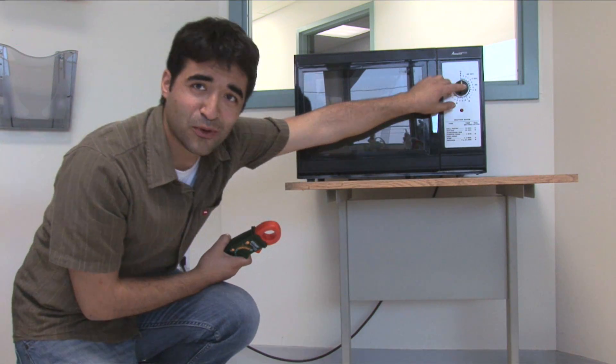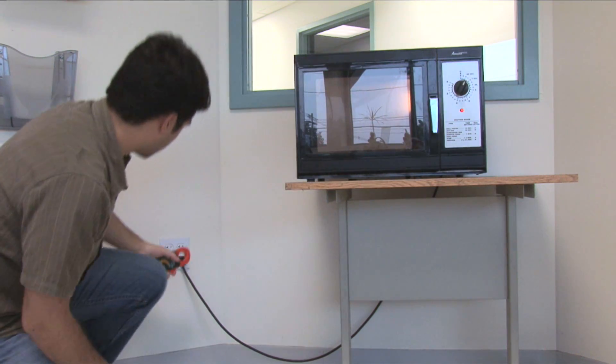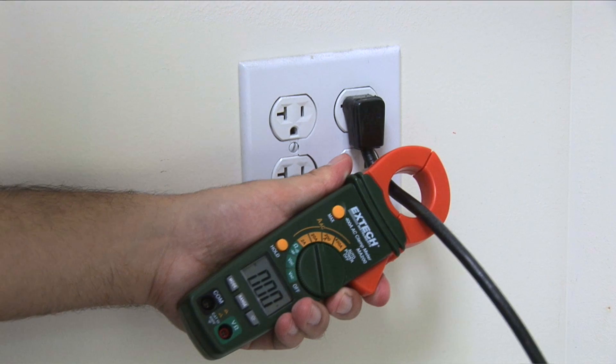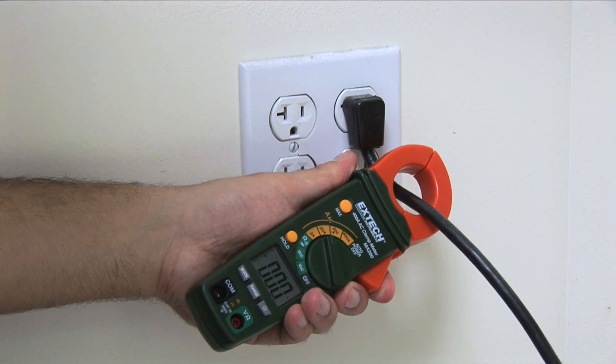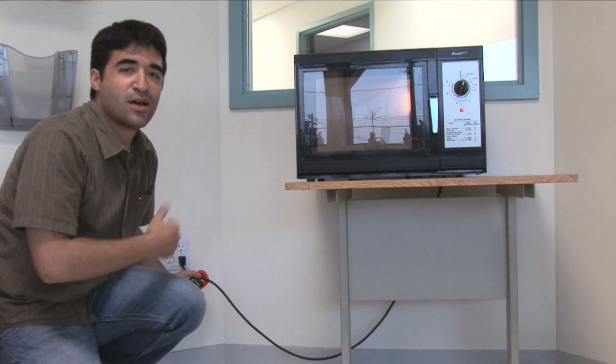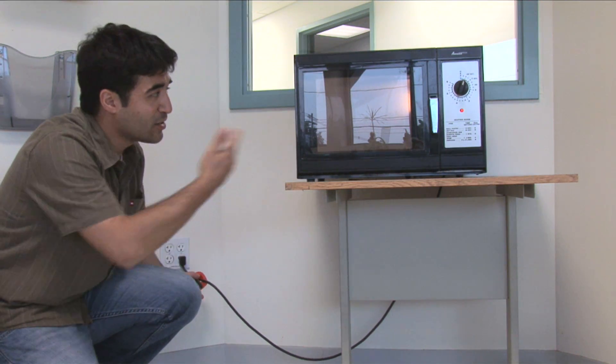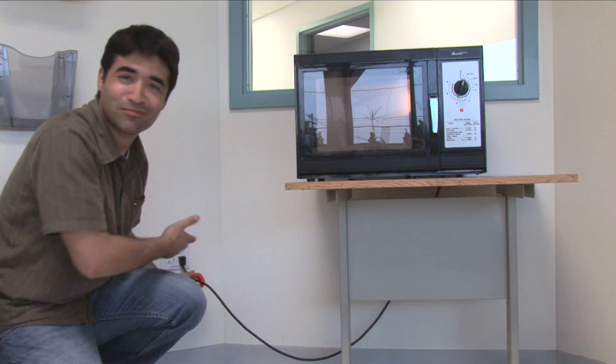For example, I've got this microwave here. Let's turn that on and take a measurement. As you can see, when I clamp directly onto the load, I'm measuring the incorrect reading of zero. Either I've got a very efficient microwave or something's wrong.